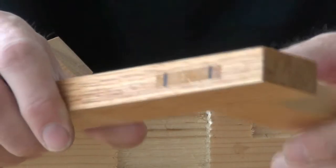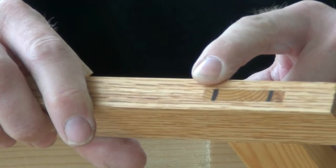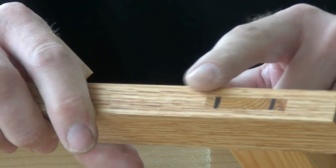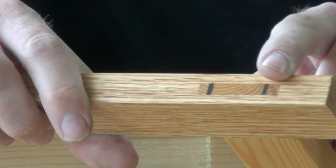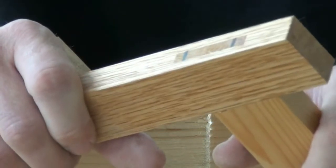Here's a through mortise and tenon, where the tenon has received wedges after it's been inserted, which push the edges of the tenon out into a slightly dovetailed mortise, and that makes it extremely difficult to pull apart.